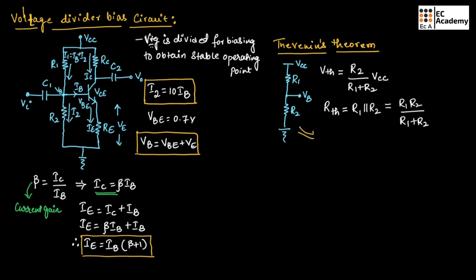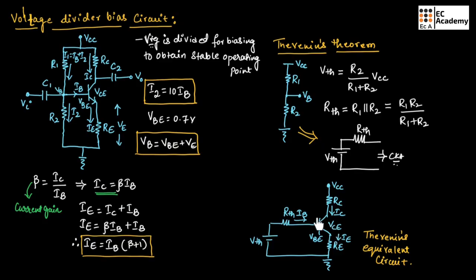This circuit can therefore be replaced with a single voltage source equal to Vth and a single resistor equal to Rth, connected to the remaining part of the circuit. This is the Thevenin's equivalent circuit. The output side is kept as it is — we have simplified only the input side using Thevenin's theorem.